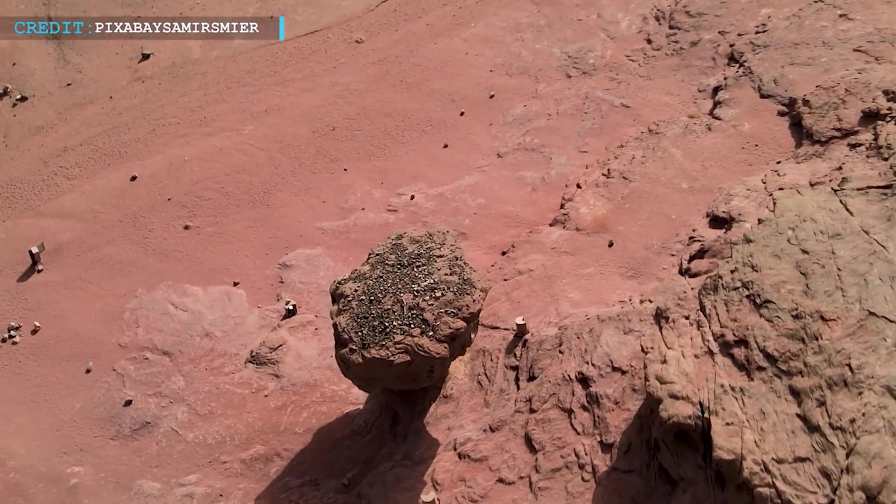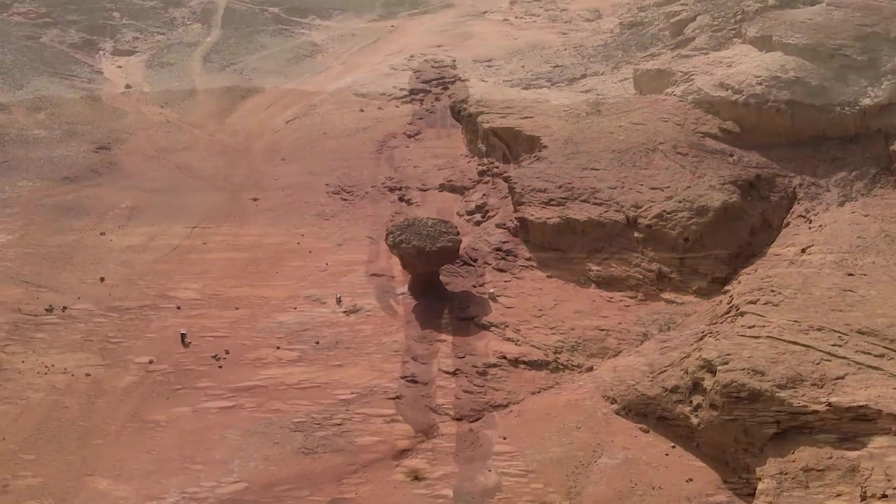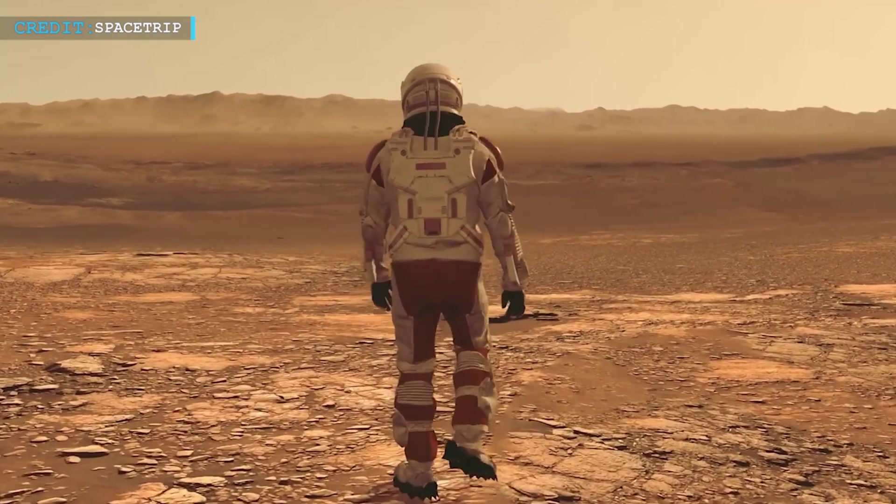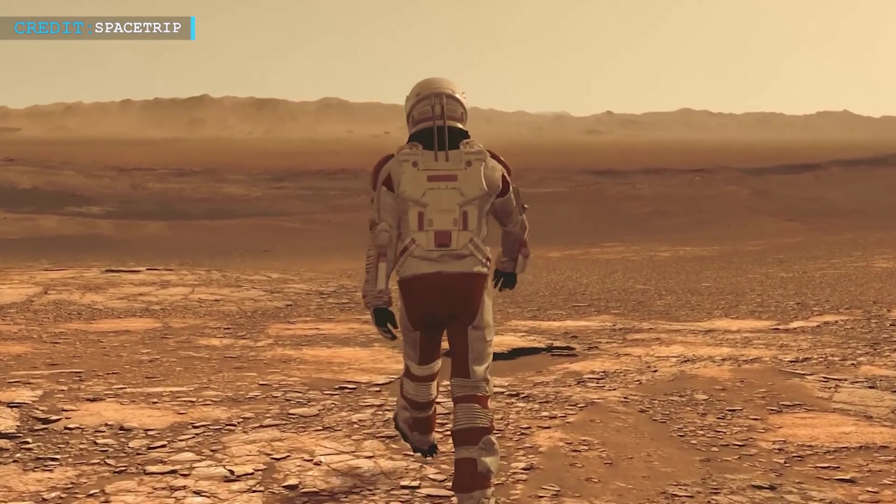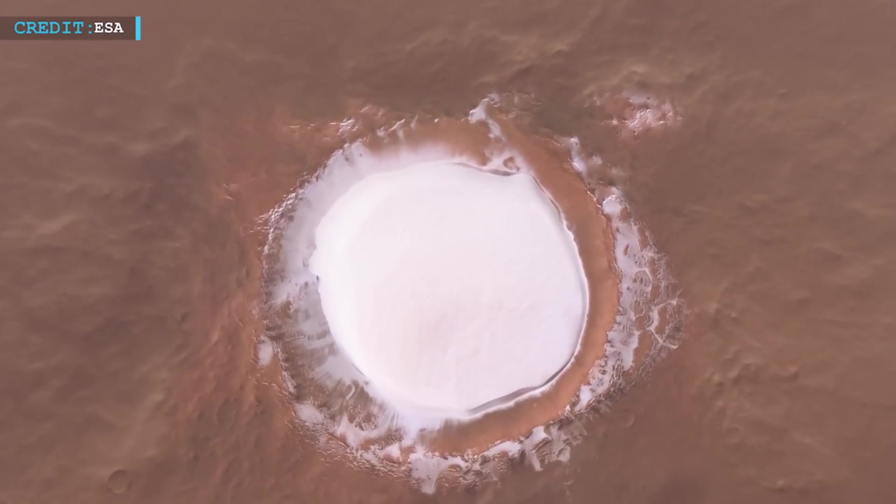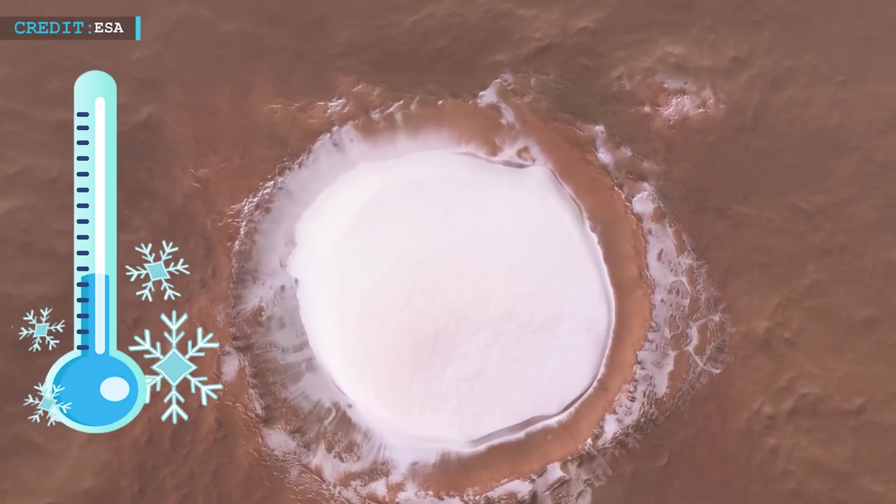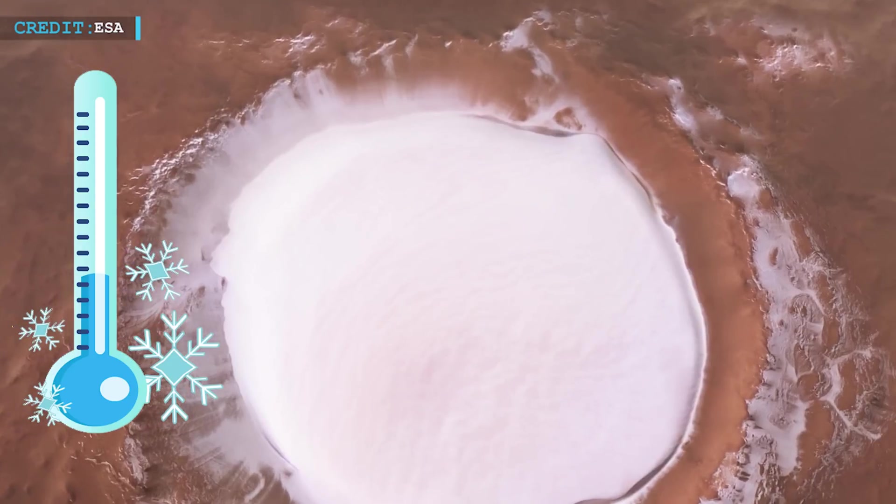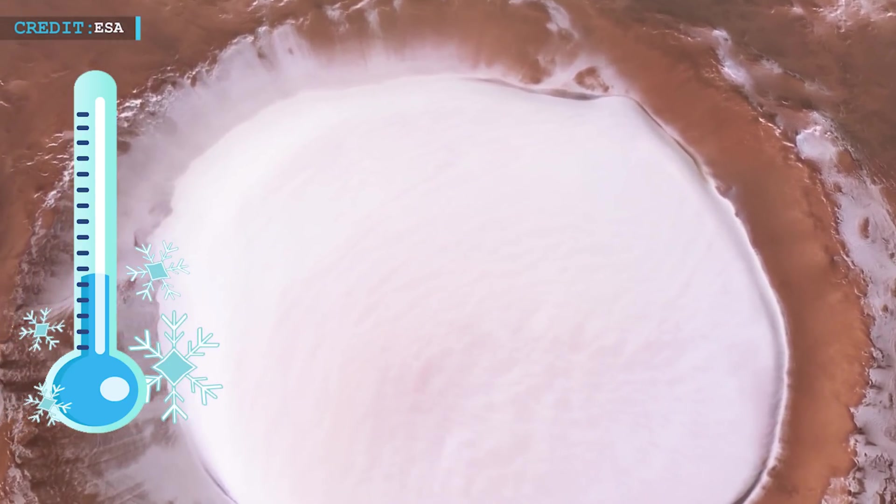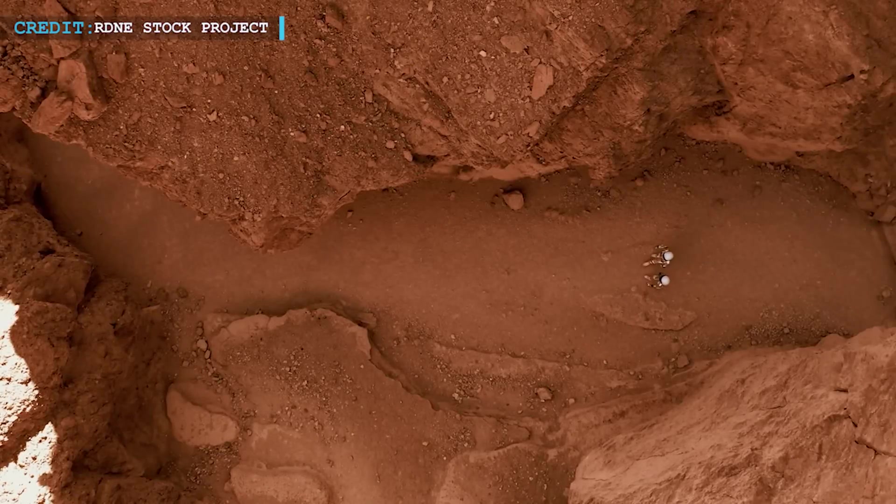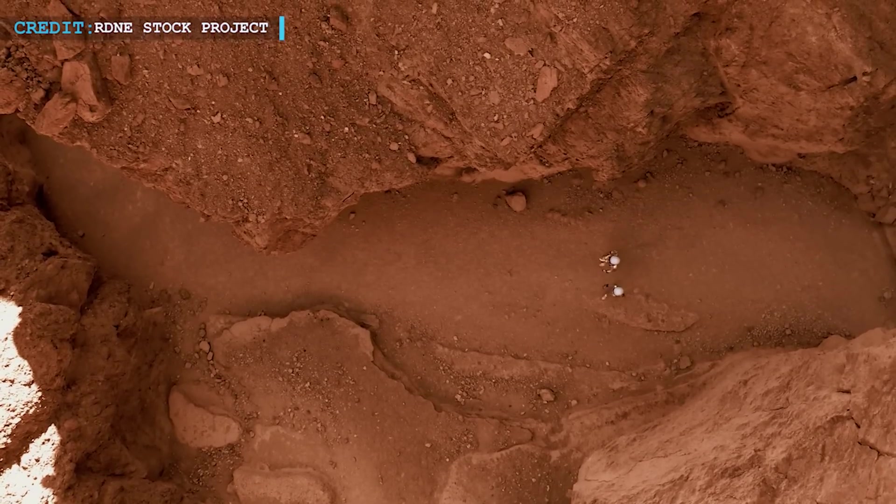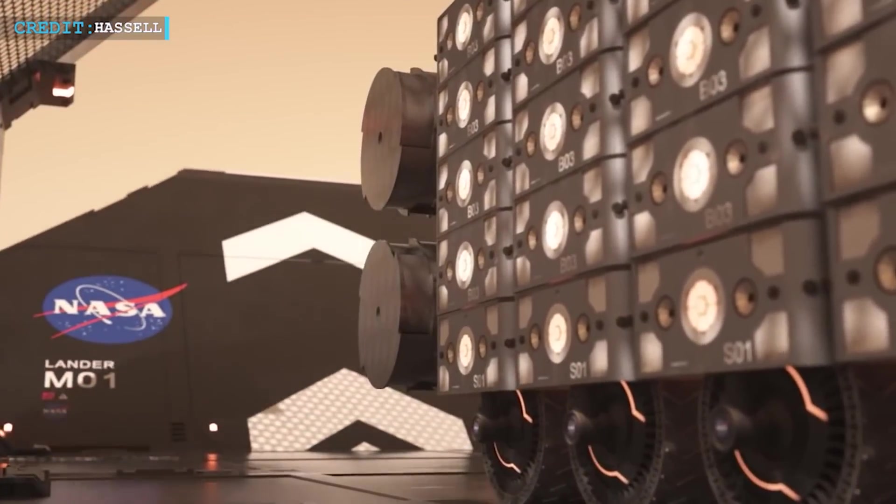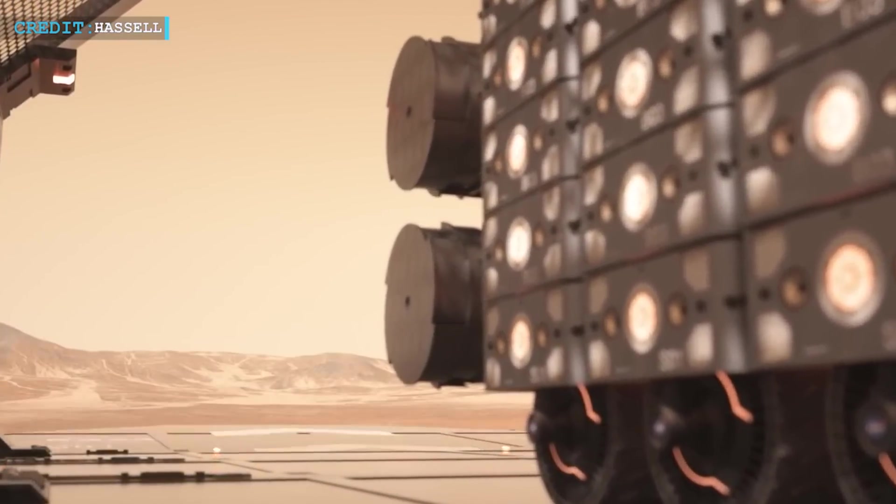The atmospheric pressure on Mars is also significantly lower than on Earth, which can lead to dangerous consequences such as body fluids boiling without proper pressurization. Moreover, Mars experiences extremely cold temperatures due to its thin atmosphere, with temperatures plummeting as low as negative 285 degrees Fahrenheit. Studies have shown that Mars lacks the required elements to create a sustainable atmosphere for human life, necessitating the need for astronauts to bring their own life-supporting systems.